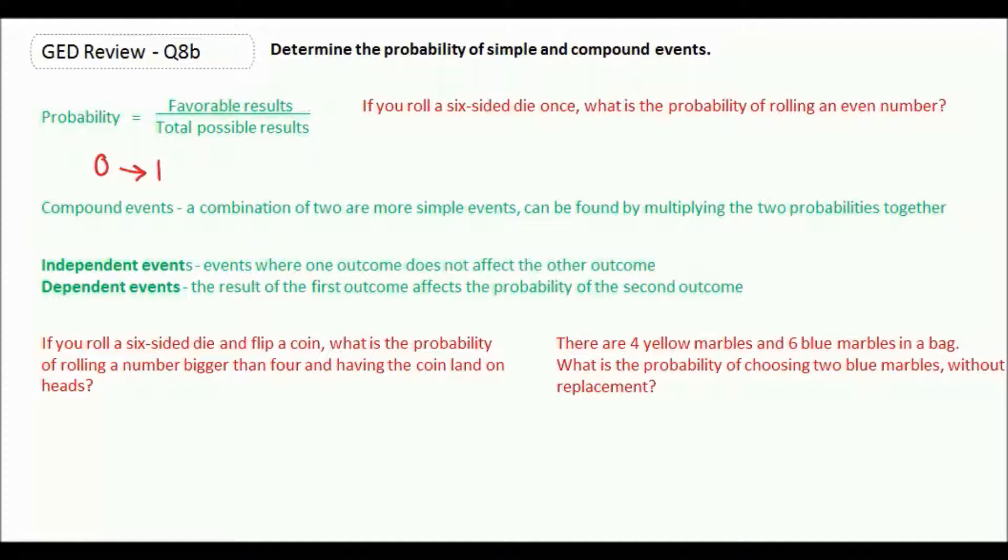So if we roll a six-sided die once, what is the probability of rolling an even number? Well, if we have a six-sided die, that means the total possible results are six, because you can get a 1, a 2, a 3, a 4, a 5, or a 6. Even numbers would be 2, 4, and 6. So those would be the favorable results. So we could have three possible good things over six total results, which means our probability is 1 half.